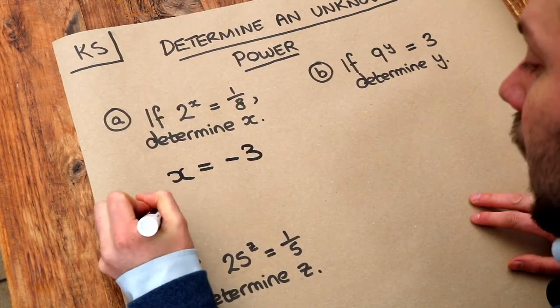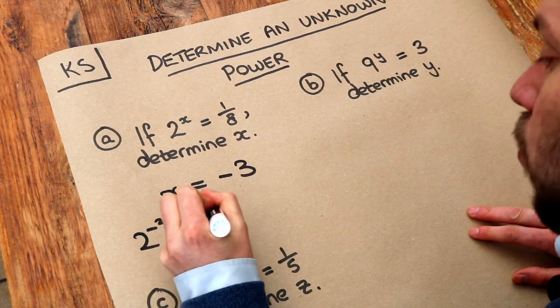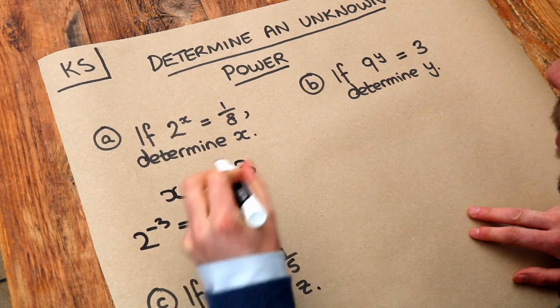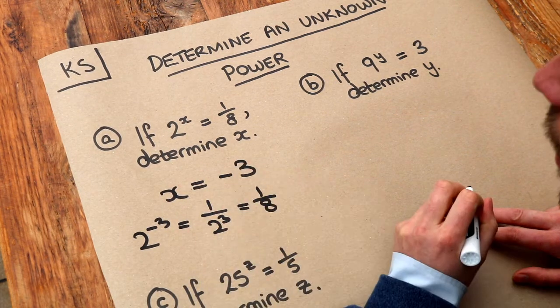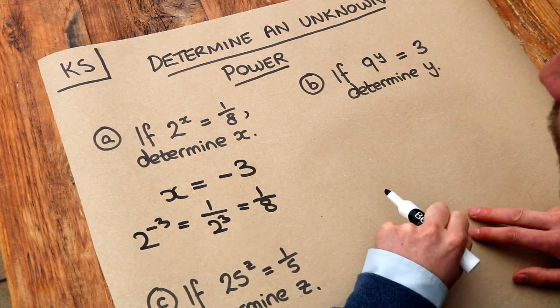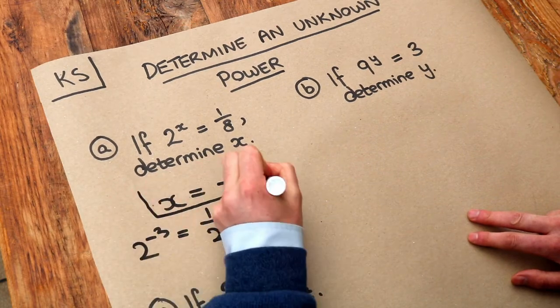So let's just test that. If we had 2 to the power of minus 3, if x was minus 3, well that would be 1 over, because it's a negative power, 2 cubed, and 2 cubed is 8, so we'd have 1 over 8. If you're not familiar with this idea of fractional or negative powers, then please watch those videos on that first. But that is the answer, x is negative 3.